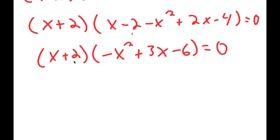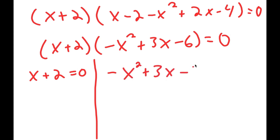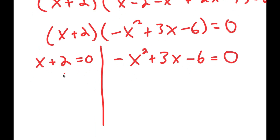So now this gives me two equations. I get x plus 2 is equal to 0, and I also get negative x squared plus 3x minus 6 is equal to 0. For x plus 2 equals 0, this is fairly simple — all I have to do is subtract 2 on both sides and I get x is equal to negative 2.